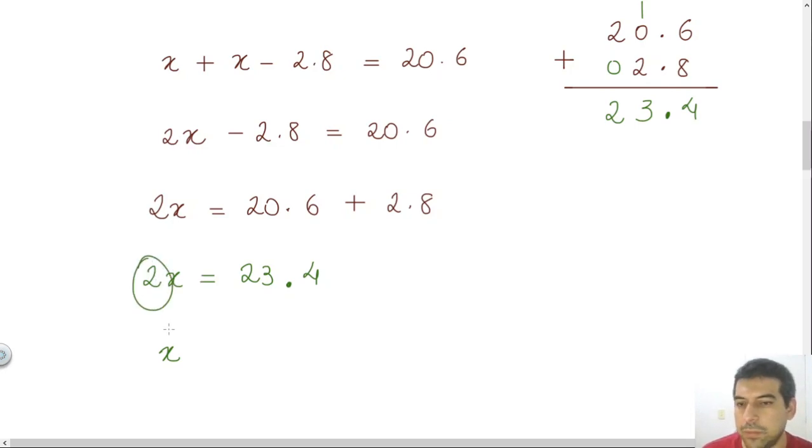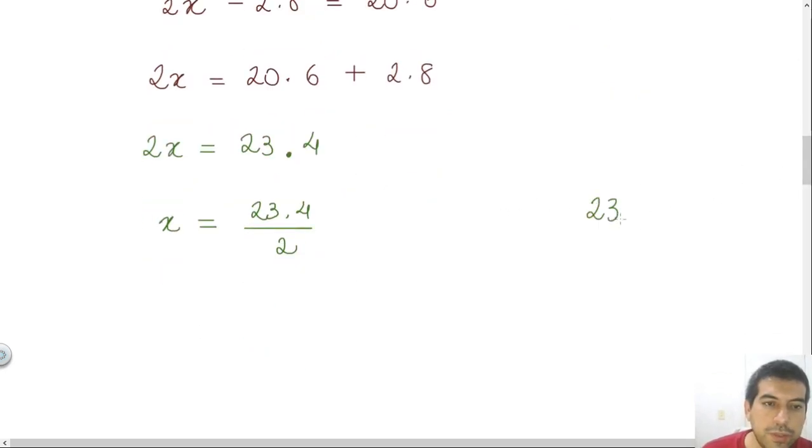This 2 is multiplying the x, the opposite of multiplication is division. So this 2 will be in the denominator here, dividing that 23.4. We just need to consider 23.4 divided by 2.